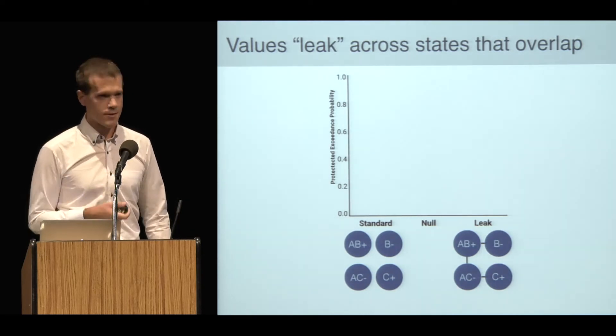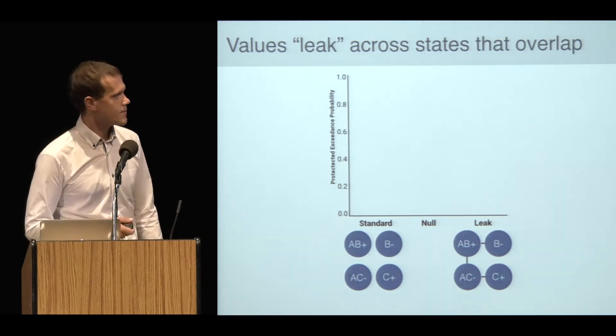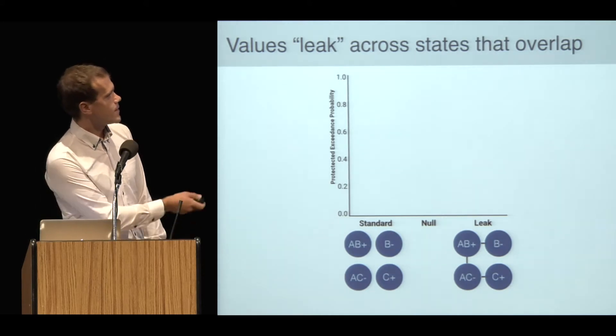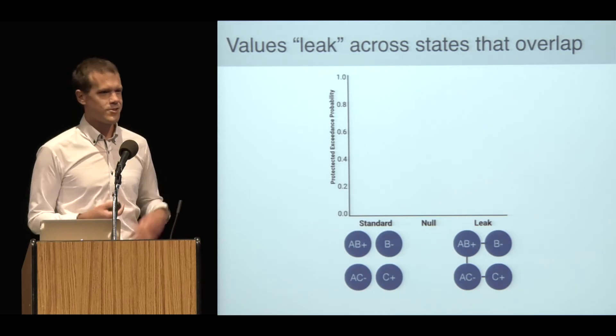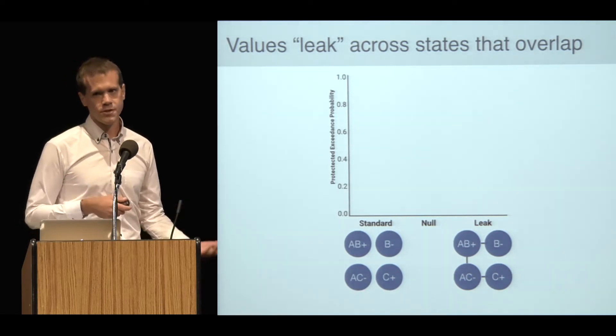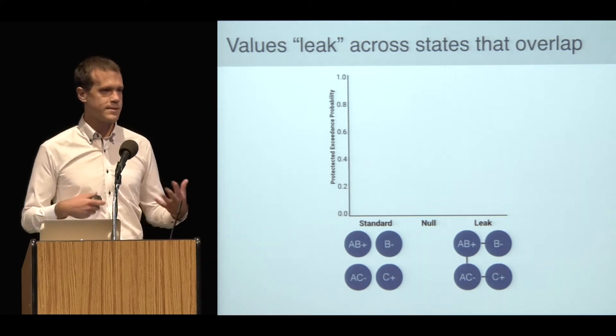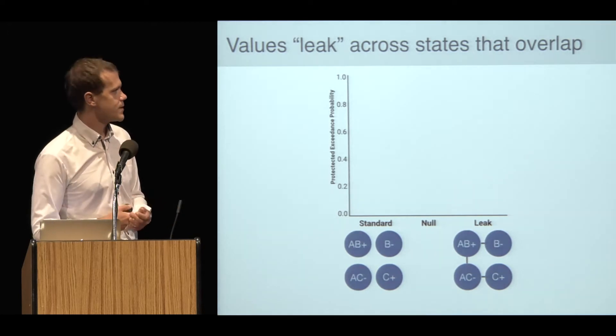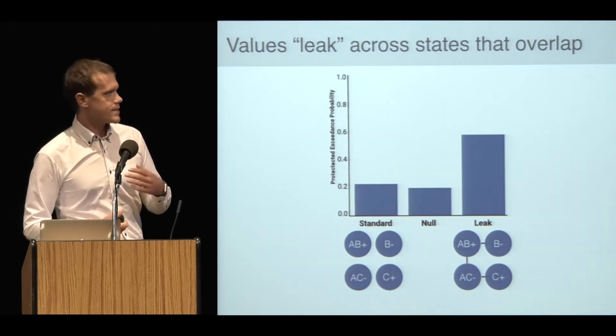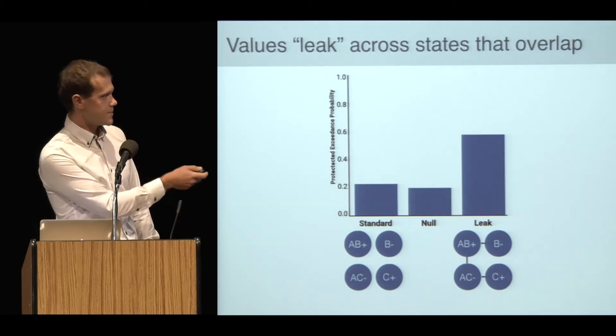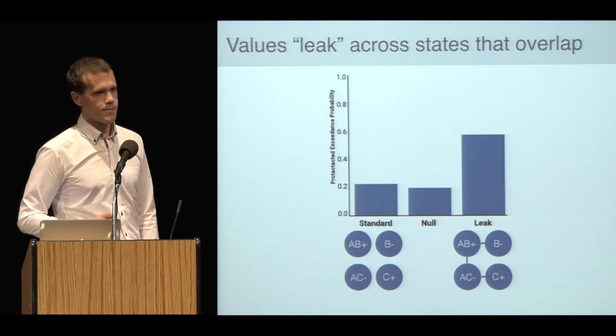I compare these models along with a null model that doesn't have any RL at all to allow for the possibility that some subjects ignored me and just did target detection. On the y-axis here is the results of a Bayesian model comparison procedure. You can interpret it roughly as the proportion of subjects you would expect to be best explained by each model in the population. The bulk of the probability mass is on this leaky model.